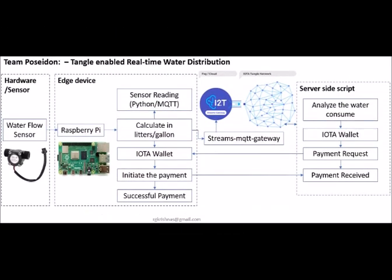Brief overview of the POC: the water flow sensors stream water flow to a processing unit — Raspberry Pi used in this POC. A Python program runs to calculate the exact consumption and stores it locally as well as in Tangle, through Stream's MQTT gateway.